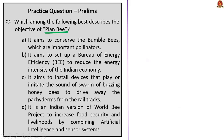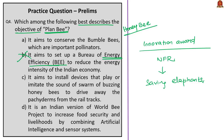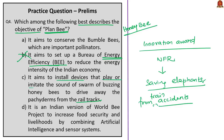The fourth question asks which option best describes the objective of 'Plan Bee.' The name refers to the flying insect bee. Plan Bee is related to an innovation award given by the Railway Ministry, awarded to Northeastern Frontier Railway. It involves installing devices that play or imitate the sound of a swarm of buzzing honeybees to drive away pachyderms — thick-skinned mammals like elephants — from rail tracks. The correct answer is option C.